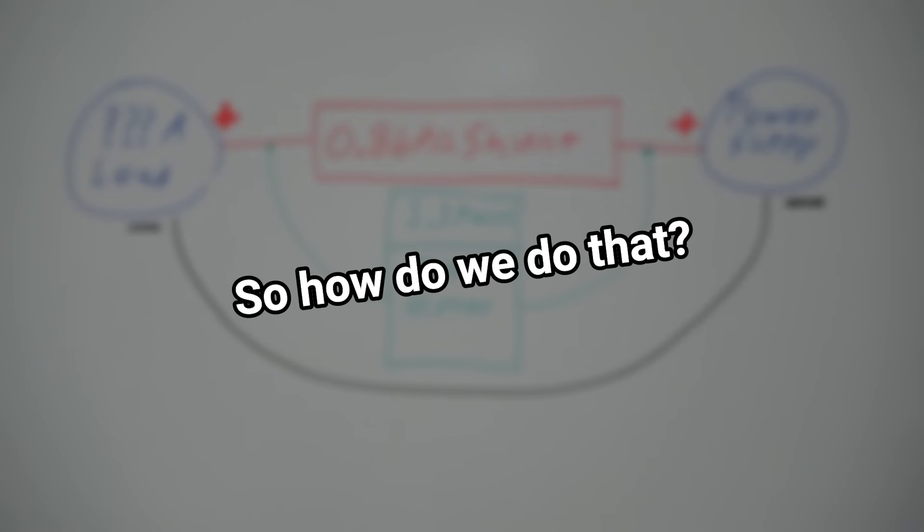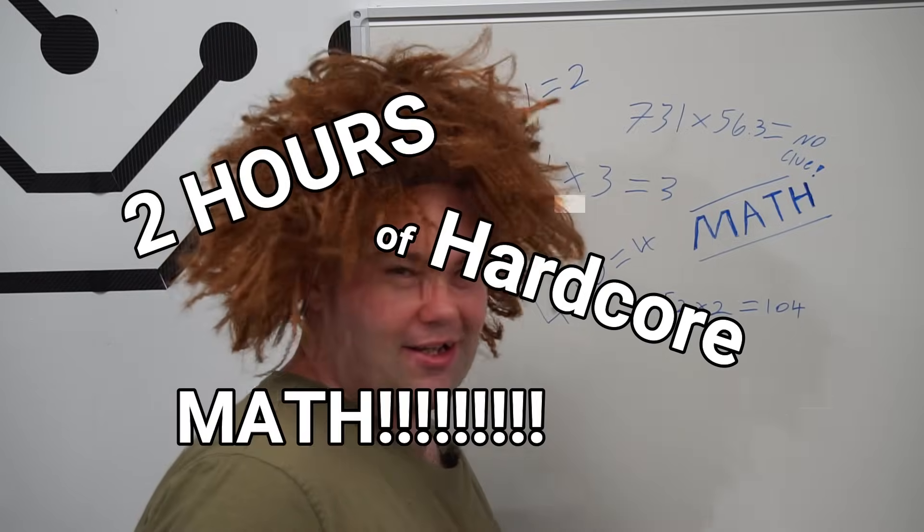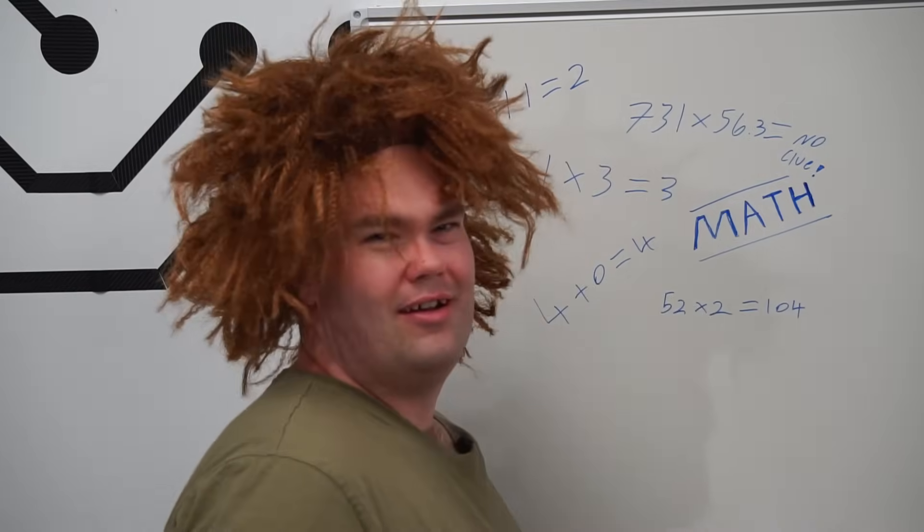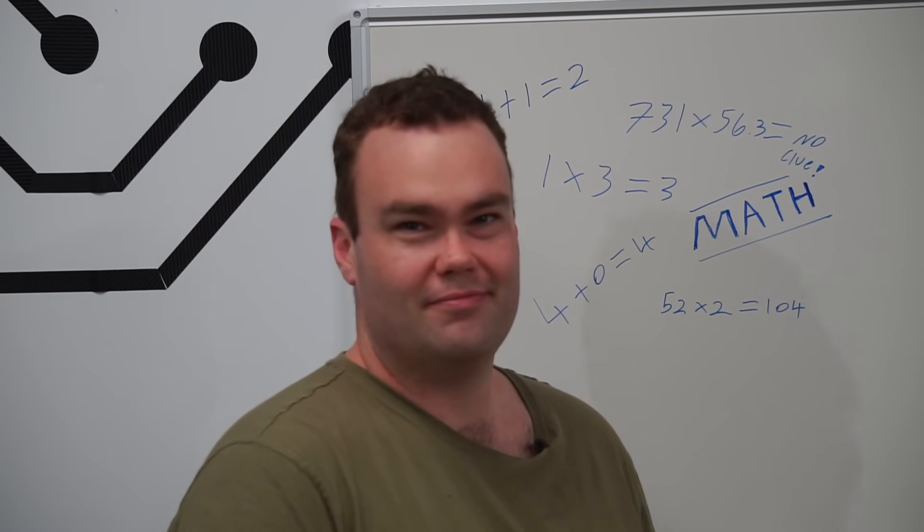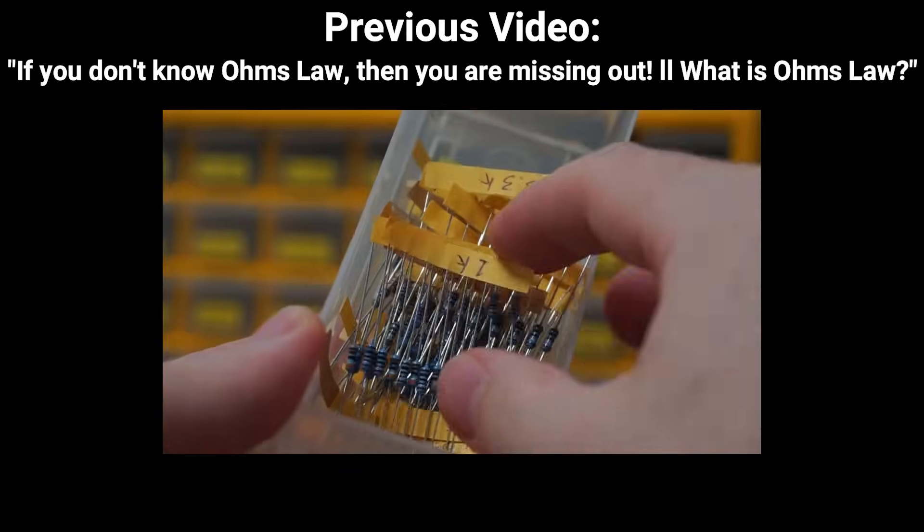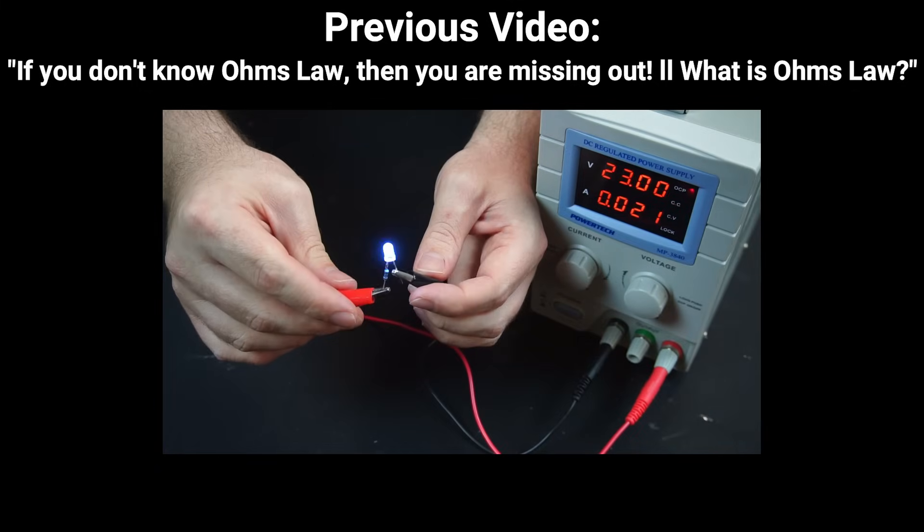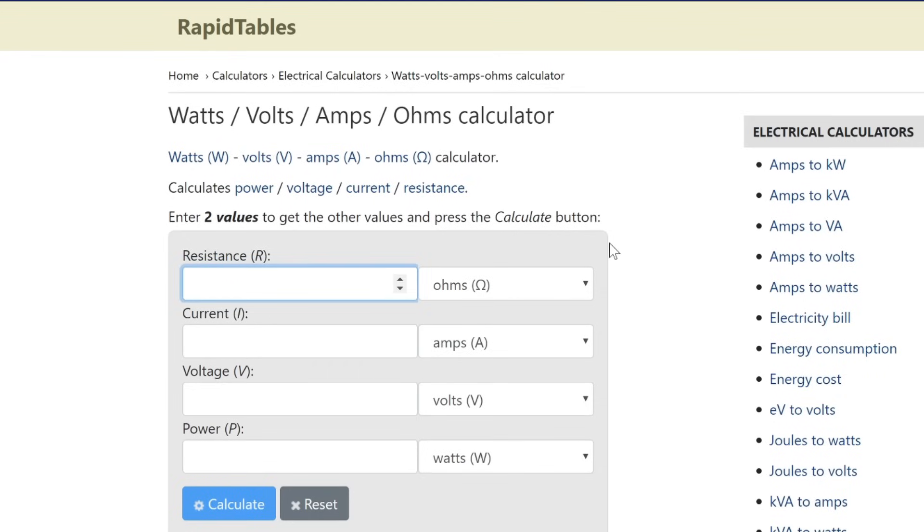However, we do know the value of the shunt and the voltage drop across it. From these two numbers, we can calculate the current draw from the load. So how do we do that? Well, get ready for two hours of hardcore math. No, I'm just kidding. Someone made a calculator to do all the work for us. If you watched my last video on Ohm's law, you probably saw this one coming.